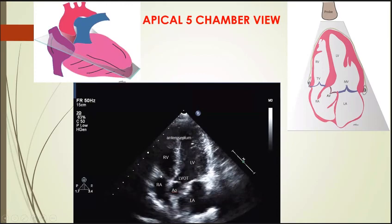The four chambers and two valves are seen, and apart from these, the aortic valve and the LVOT are also seen. Whatever we can diagnose in the apical four-chamber view can also be diagnosed here. Extra findings include any LVOT obstruction, aortic pathologies, and aortic valve pathologies like infective endocarditis of the aortic valve, aortic stenosis, or aortic regurgitation — all can be clearly seen in this view.